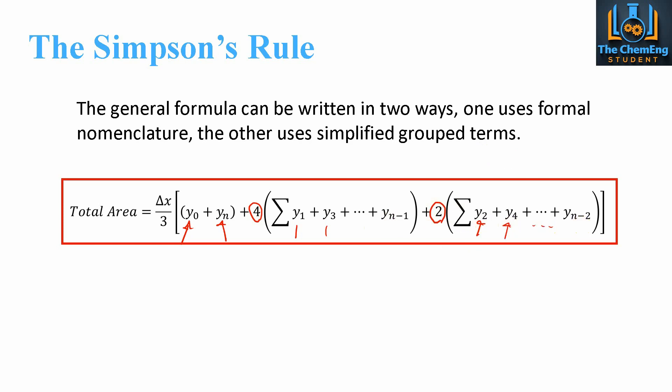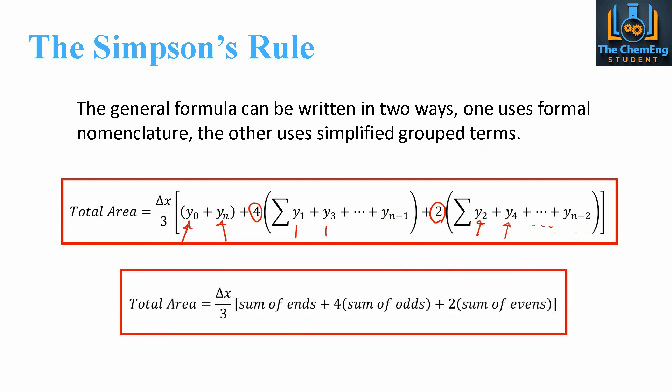Now, we can summarize this in a more informal way. And we can say that the total area is equal to delta x over three multiplied by the sum of the end terms. So, that's these two. Four times the sum of the odd terms. So, the odd values of n. So, that's the y1, the y3, that would be y5, and so forth. Then, two multiplied by the sum of the even terms. So, that would be the two, the four, the six, and so forth. So, you can see that this one is a lot more simpler to get your head round how this actually works.